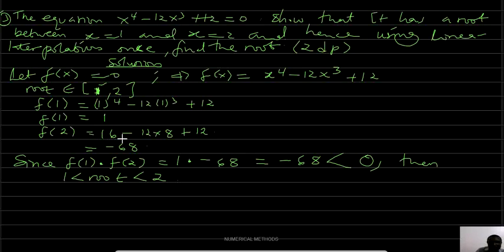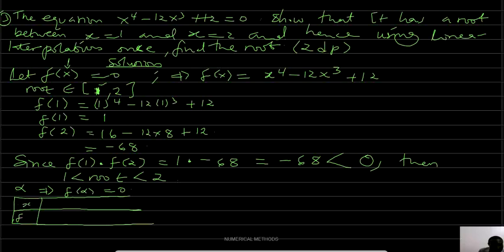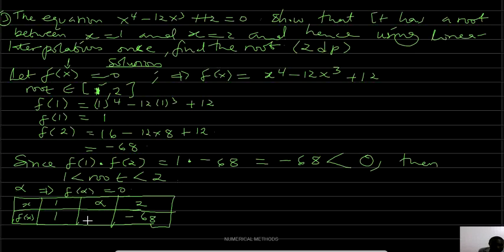Using linear interpolation once to find the root: let alpha be the root, so f(alpha) = 0. We set up the table with x = 1 corresponding to f(1) = 1, x = 2 corresponding to f(2) = -68, and alpha corresponding to f(alpha) = 0.